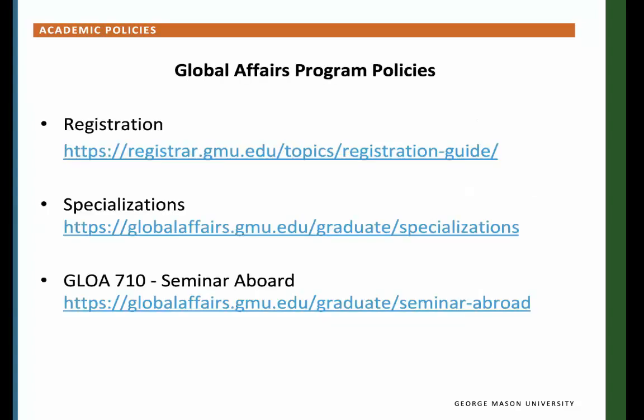Academic Policies — Global Affairs Program policies. The Global Affairs core courses are offered each fall and spring semester, with the exception of GLOA 710 Seminar Abroad. Core courses are not offered in the summer. If you wish to take a course in the summer, you are encouraged to register for specialization courses. Specialization: you will need to complete a total of 12 credits towards your specialization. Courses must come from at least two departments or programs, meaning courses need at least two different prefixes — they must come from two different disciplines. The specialization course list will be published online on the Global Affairs website each semester and an email will go out to let you know the list is live.